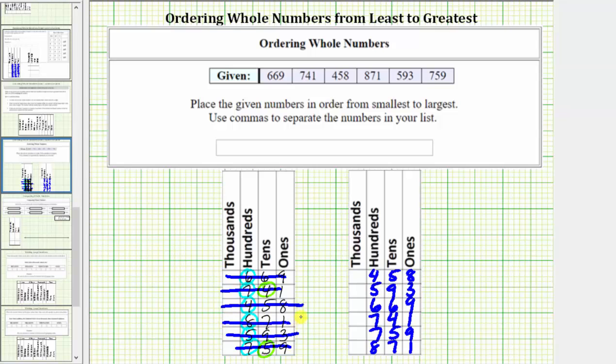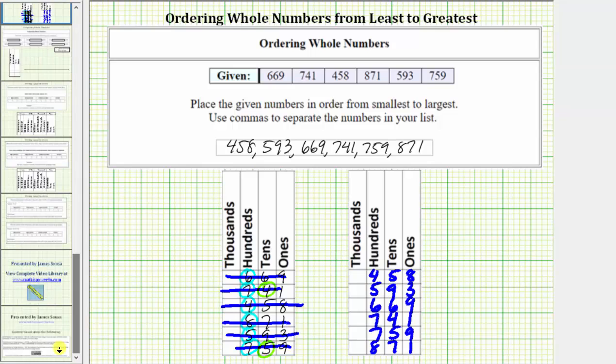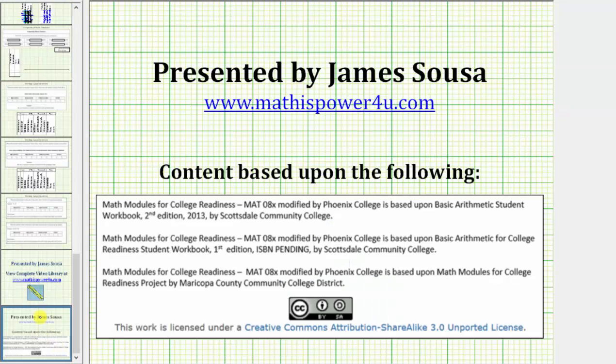Now that we have the values sorted from least to greatest using the place value chart, we can enter the answer as a list. We enter 458 comma 593 comma 669 comma 741 comma 759 comma 871. I hope you found this helpful.